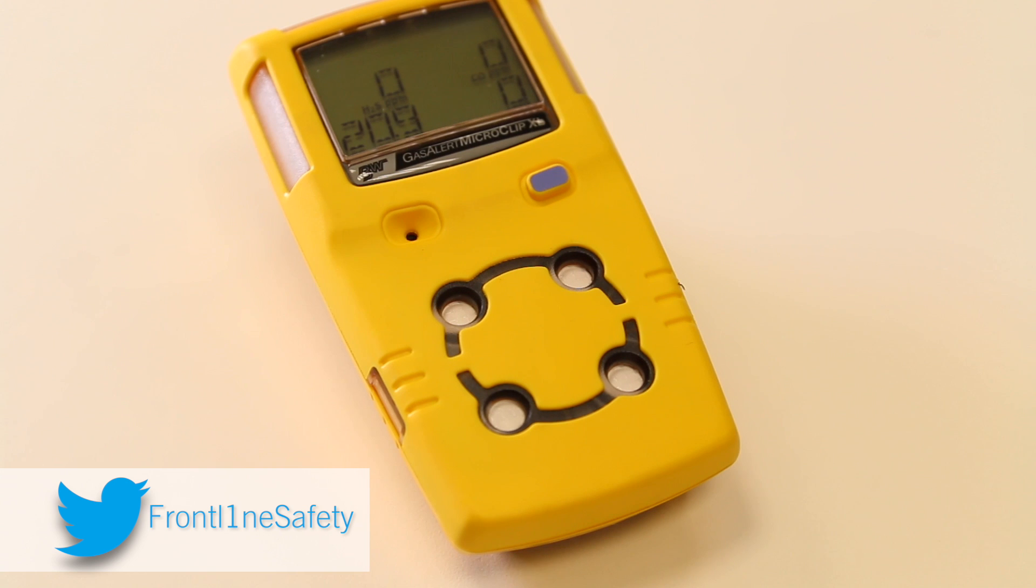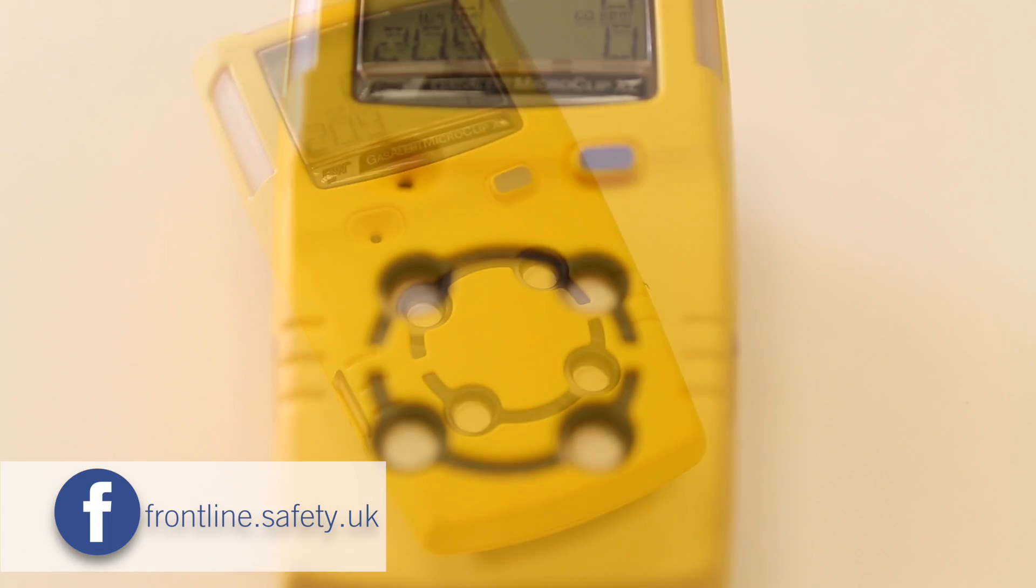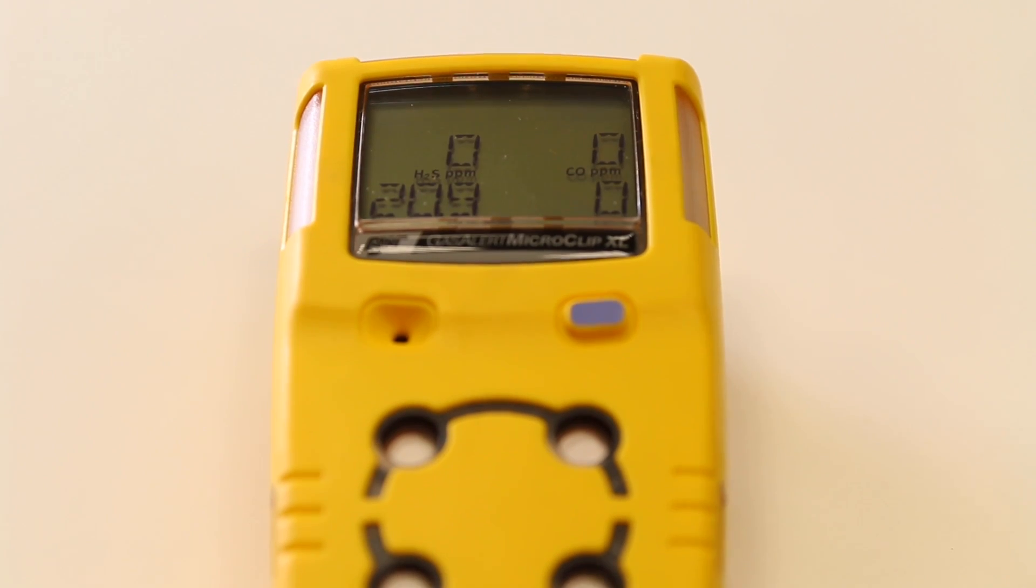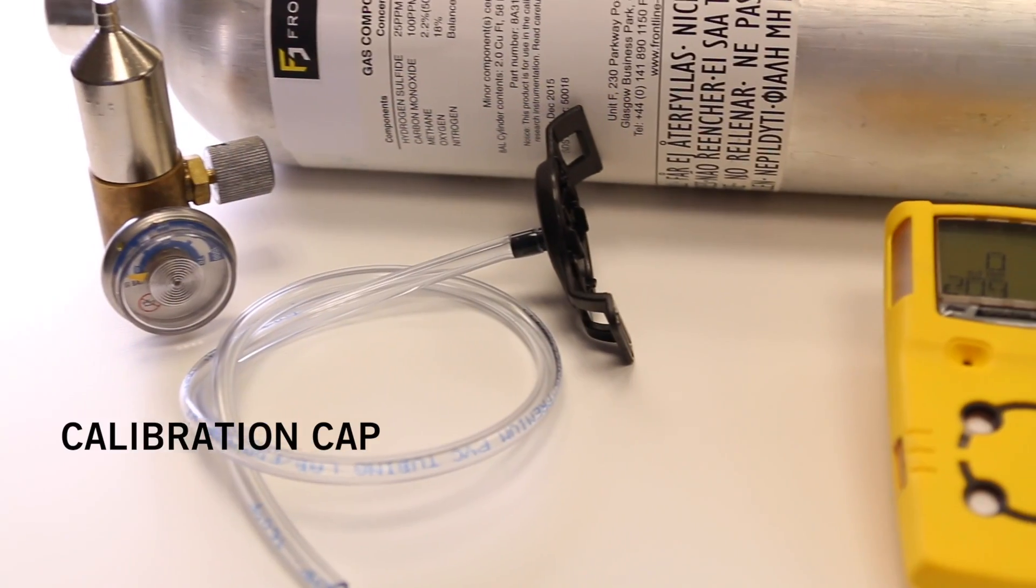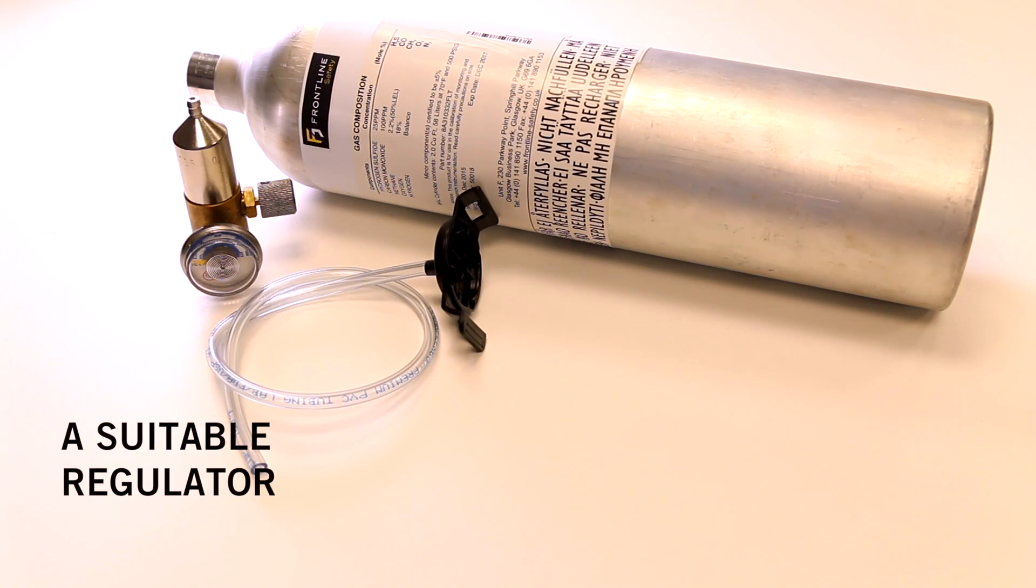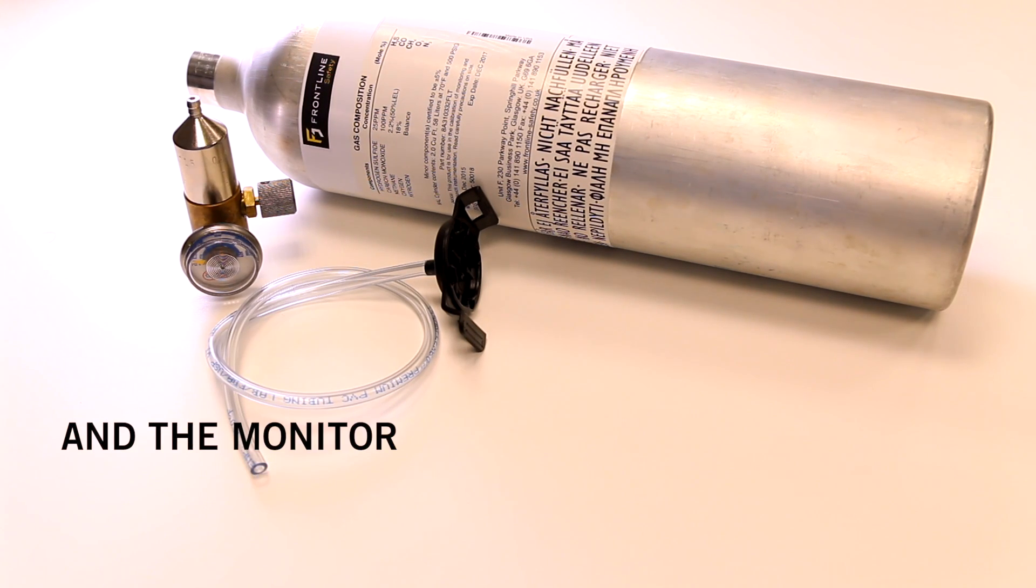Make sure you're calibrating in a safe area that's free of hazardous gas and has an atmosphere of 20.9% oxygen. You'll need the calibration cap which should come with the unit, calibration tubing, a suitable regulator, and of course the monitor itself.